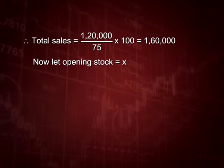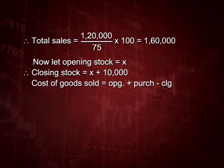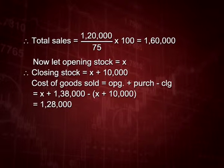So cash sales are 40 thousand and credit sales are 1 lakh 20 thousand, making total sales 1 lakh 60 thousand. Let us assume opening stock as X, so closing stock will be X plus 10 thousand. Cost of goods sold equals opening stock plus purchases minus closing stock: X plus 1 lakh 38 thousand minus (X plus 10 thousand), giving us 1 lakh 28 thousand.